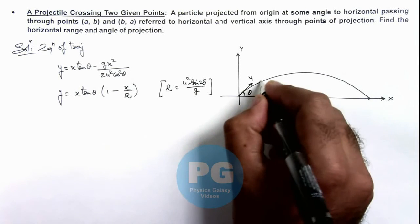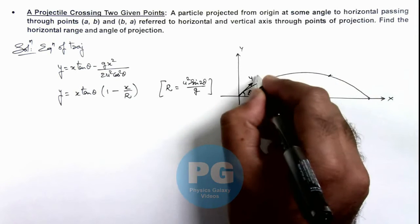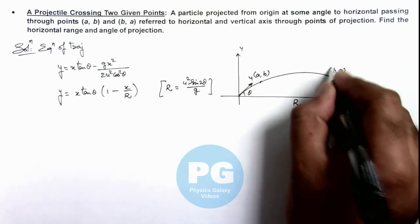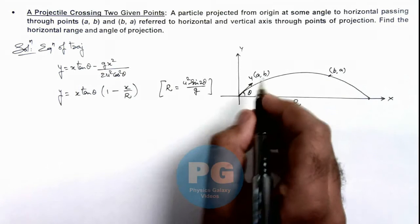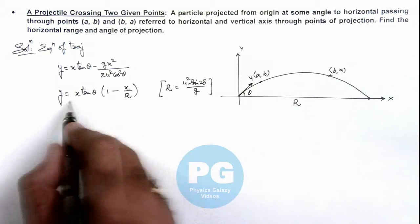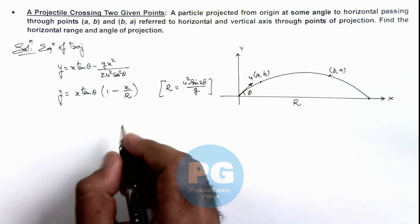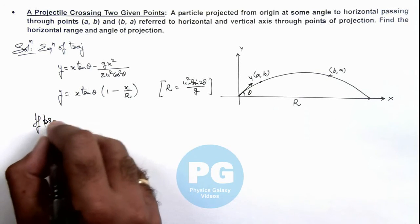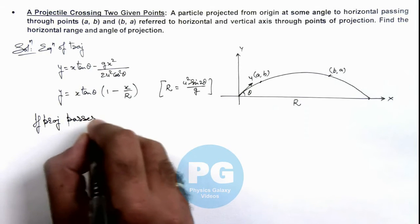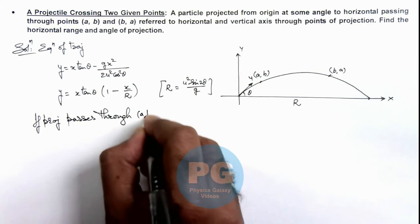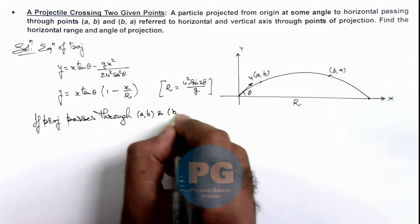Now in this situation if there are 2 points, one is (a,b) and say other is (b,a) - wherever these are located randomly I have chosen the points. So both of these points must satisfy this trajectory equation. So here we can write if projectile passes through (a,b) and (b,a),